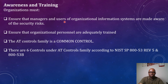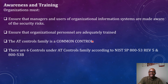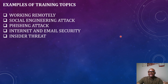The Awareness and Training control family is a common control, meaning it is the organization that provides this control. Common controls have the capability to secure multiple information systems at once and are inheritable. So whether your system is categorized as low, moderate, or high, it must inherit the Awareness and Training control family. According to NIST 800-53, there are six controls under Awareness and Training.